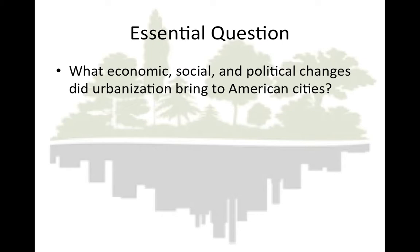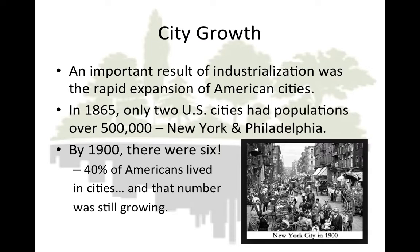In the last unit, we learned how American industrialization increased its pace in the decades following the Civil War. Accelerating industrialization contributed to the process of urbanization — the movement of people from the countryside to towns and cities. An important result of industrialization was the rapid expansion of American cities. In 1865, only two U.S. cities had populations of more than 500,000: New York and Philadelphia.